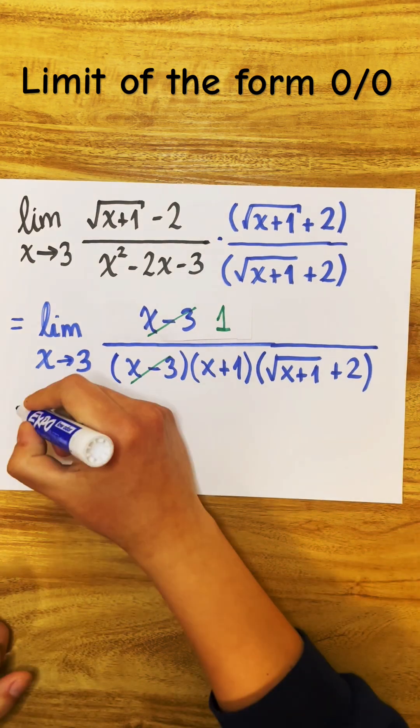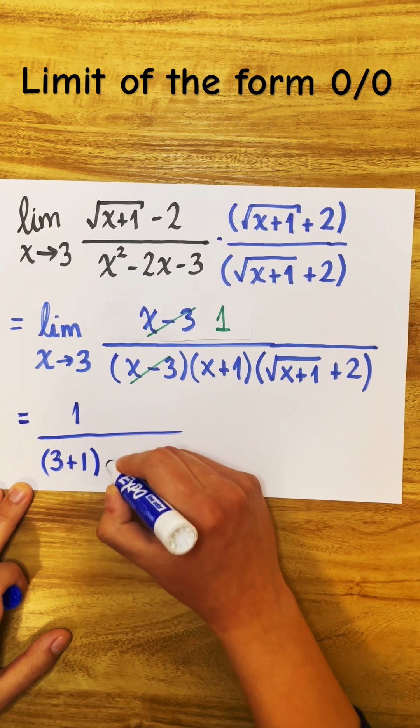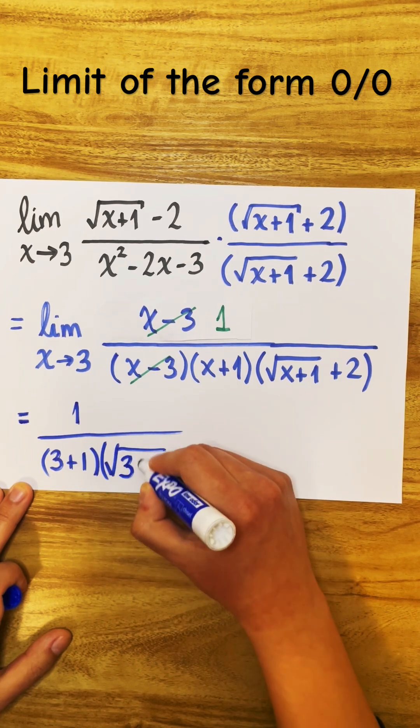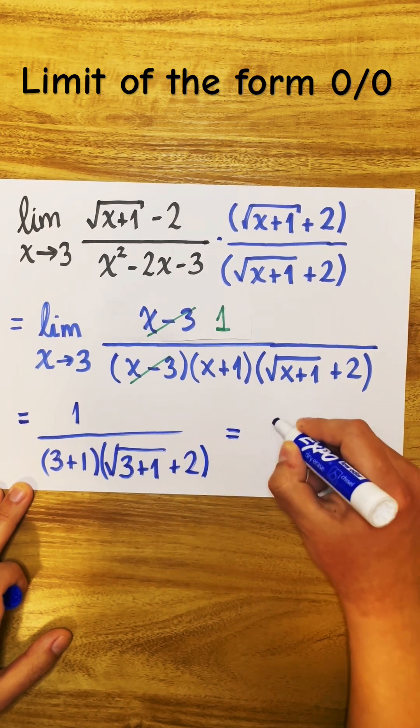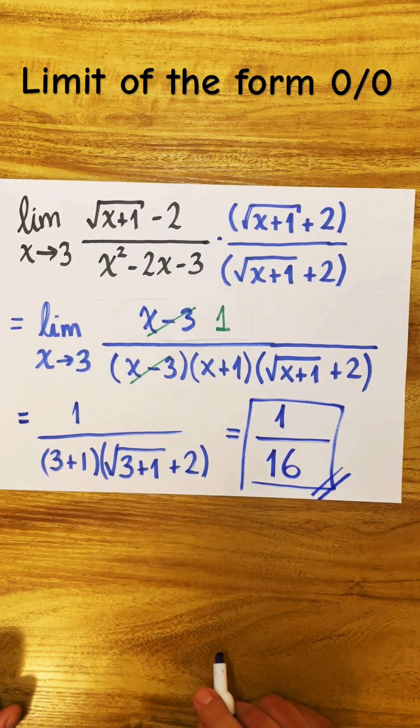And now, our final step is just evaluate the limit by plugging in 3. So we have 1 over 3 plus 1, which is 4, divided by the square root of 3 plus 1 plus 2, which is also 4. So we have 1 over 4 times 4, which is 16. 1 over 16.